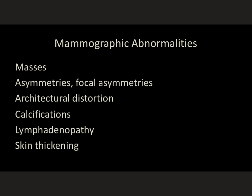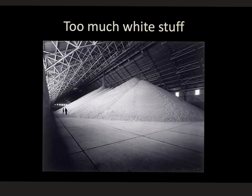Just to remind you, the mammographic abnormalities that we're looking for on screening mammograms — this is not an all-inclusive list — are masses, asymmetries and focal asymmetries, architectural distortion, calcifications, lymphadenopathy, and skin thickening. So this is what you're really looking for on mammograms: too much white stuff, white stuff that wasn't there before and is there now.